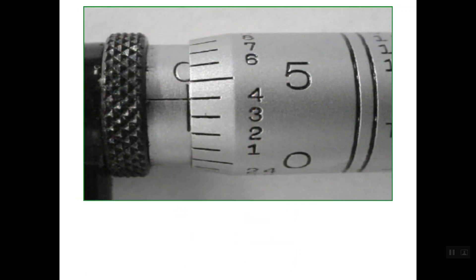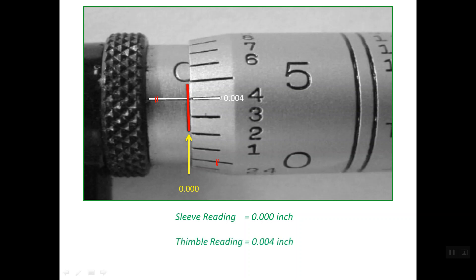Let's read this last micrometer. The edge of the thimble completely passes the 0 line on the sleeve scale. We confirm this by looking at the 0 line on the thimble: it lies below the reference line. So the sleeve reading is line 0, meaning 0 inch. The reference line lines up with the fourth line on the thimble, so the thimble reading is 0.004 of an inch. The total reading is simply 0.004 of an inch.